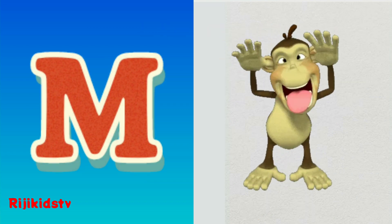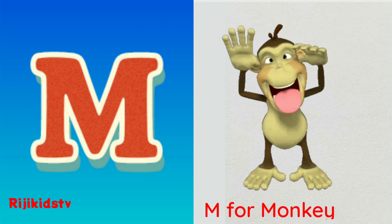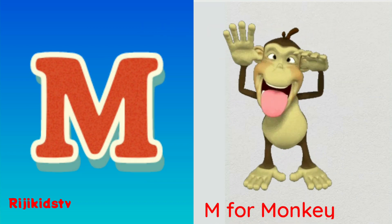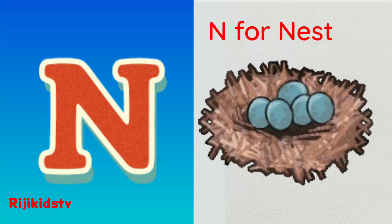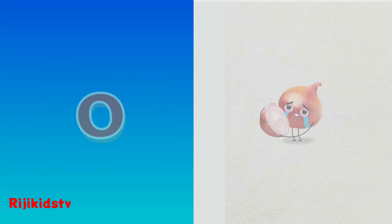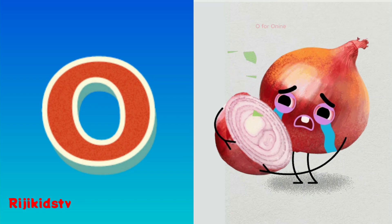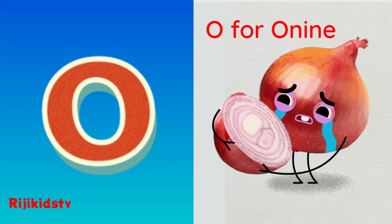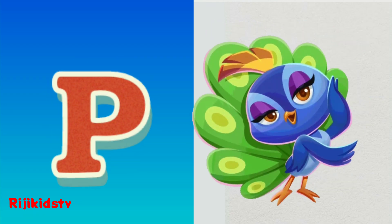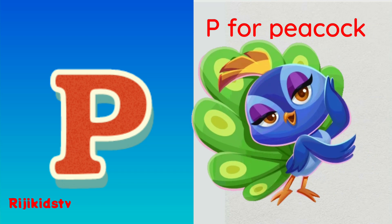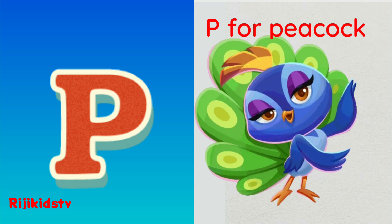M. M for Monkey. N. N for Nest. O. O for Onion. P. P for Peacock.